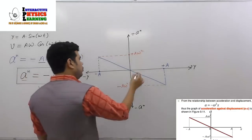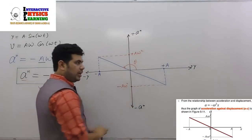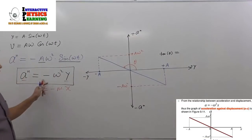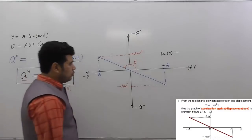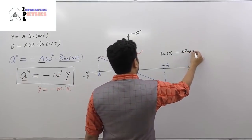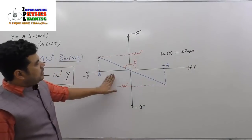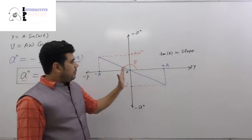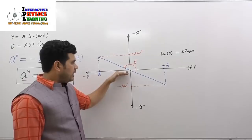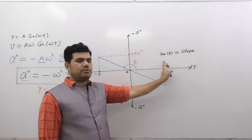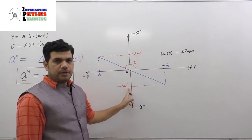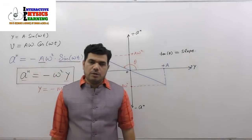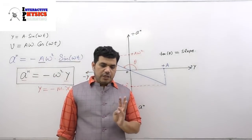Looking at the slope of this graph, the angle θ gives tan(θ) = slope, and the slope is negative. So the graph of acceleration versus displacement is a straight line through the origin with negative slope. When displacement is zero, acceleration is also zero. As displacement increases positively, acceleration increases negatively. When displacement is at positive maximum, acceleration is at negative maximum, and vice versa.